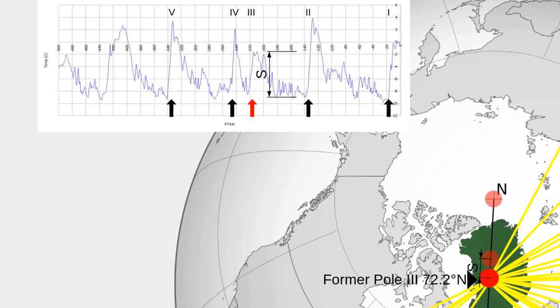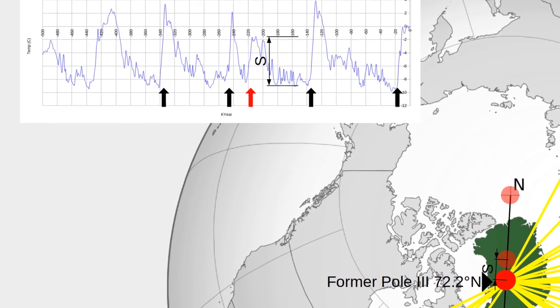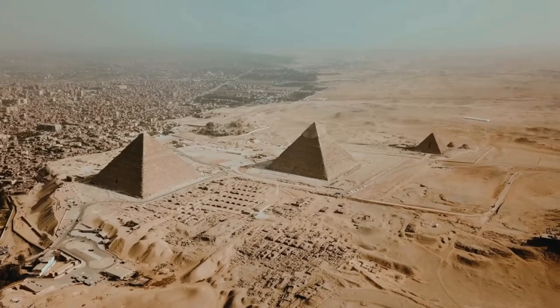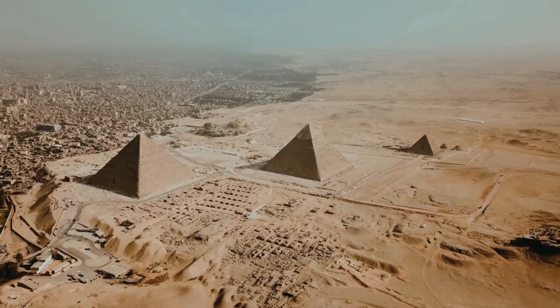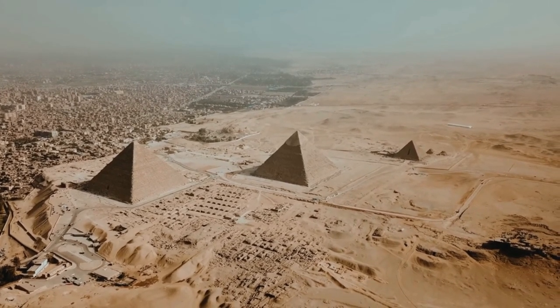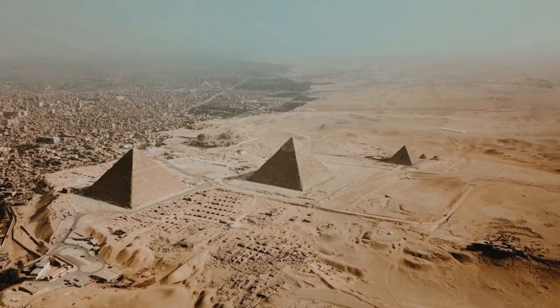To give you an idea, our research has demonstrated six timeframes of ancient civilizations covering more than 400,000 years. Pyramids of Giza, for example, are a magnificent achievement of the most recent lost civilization. We estimate these structures to be approximately 15,000 years old.